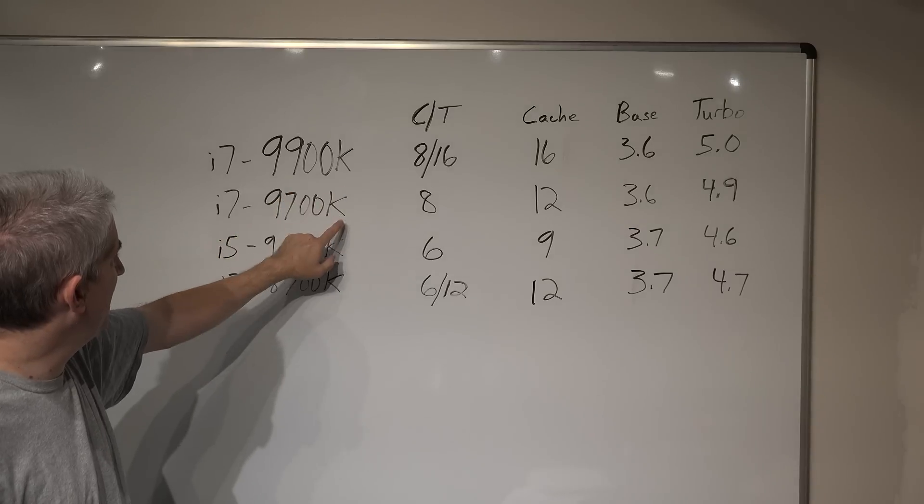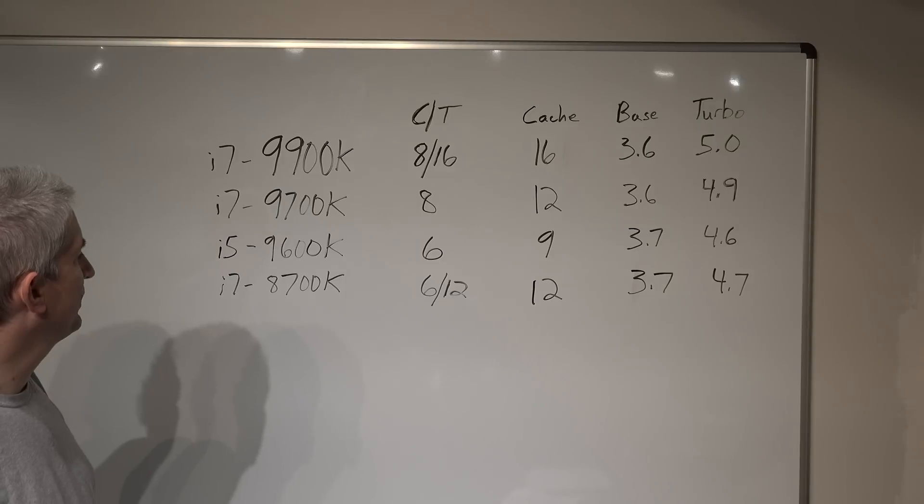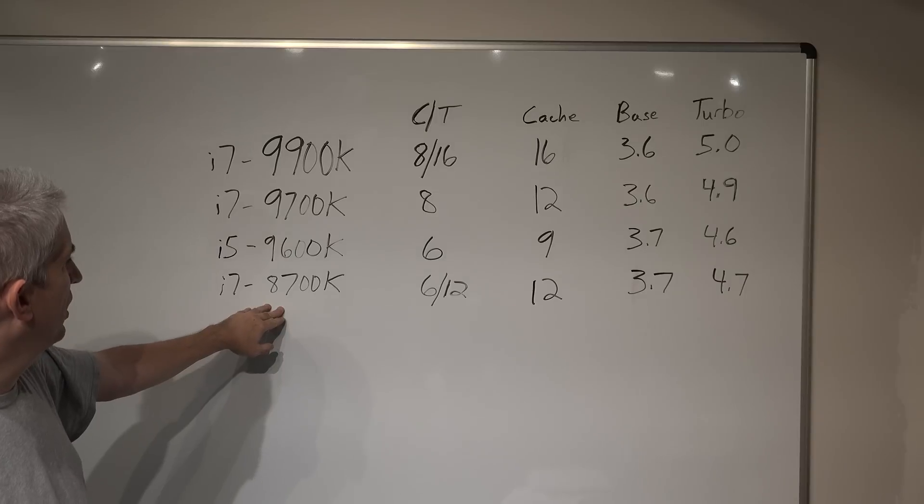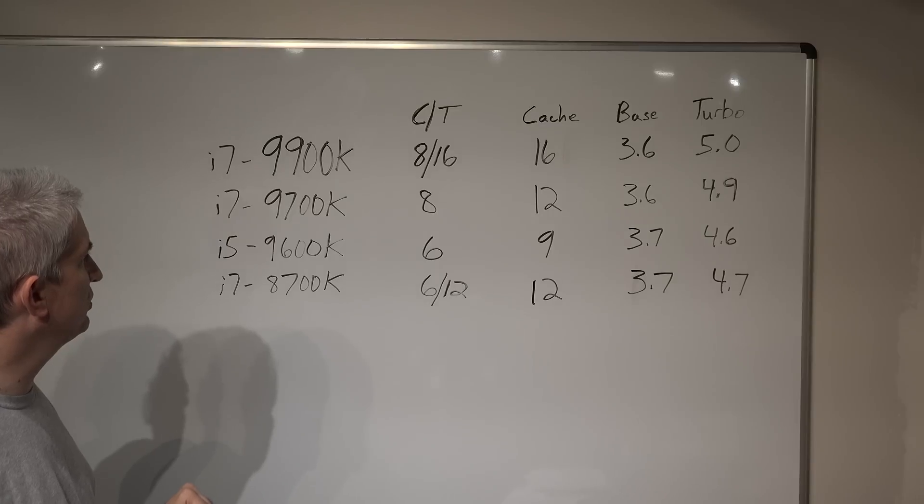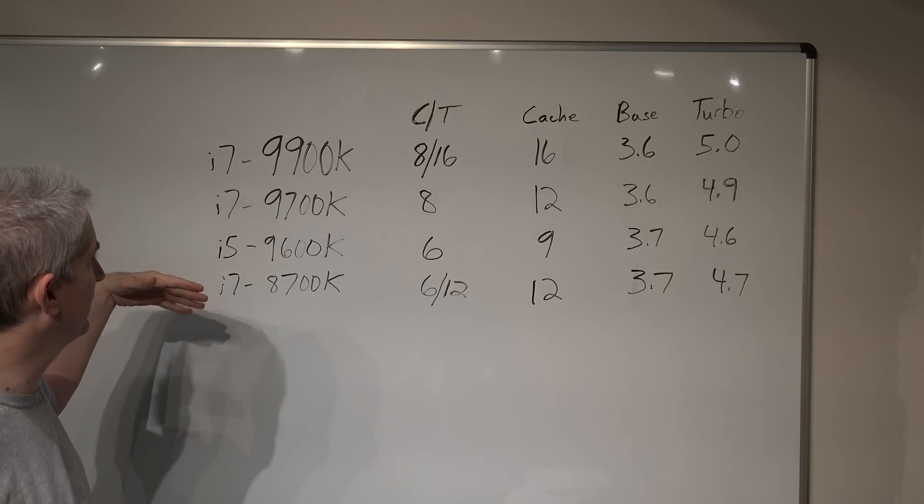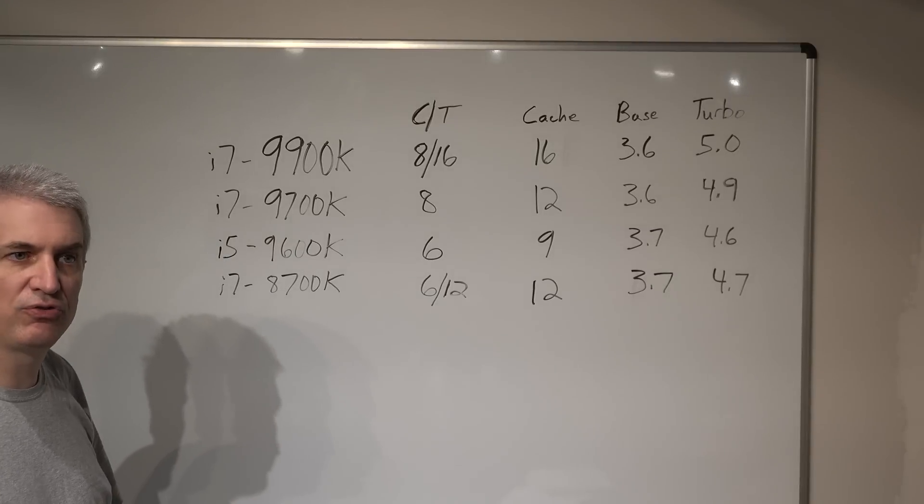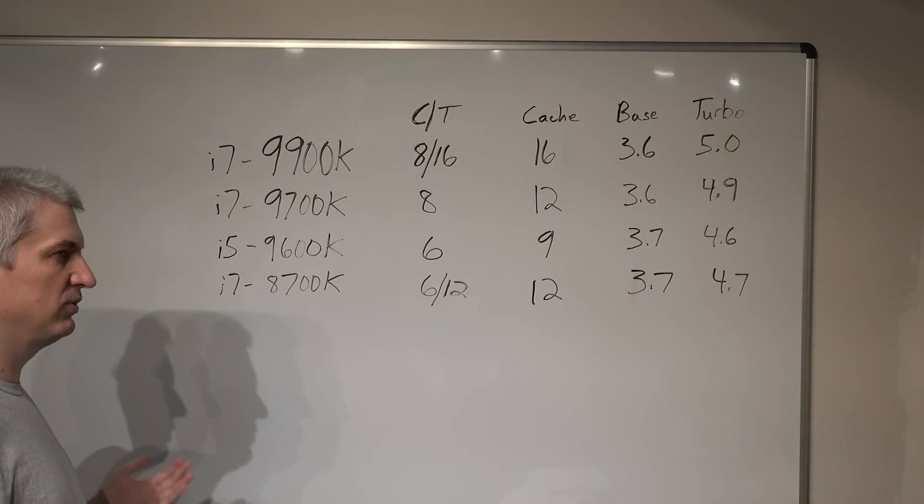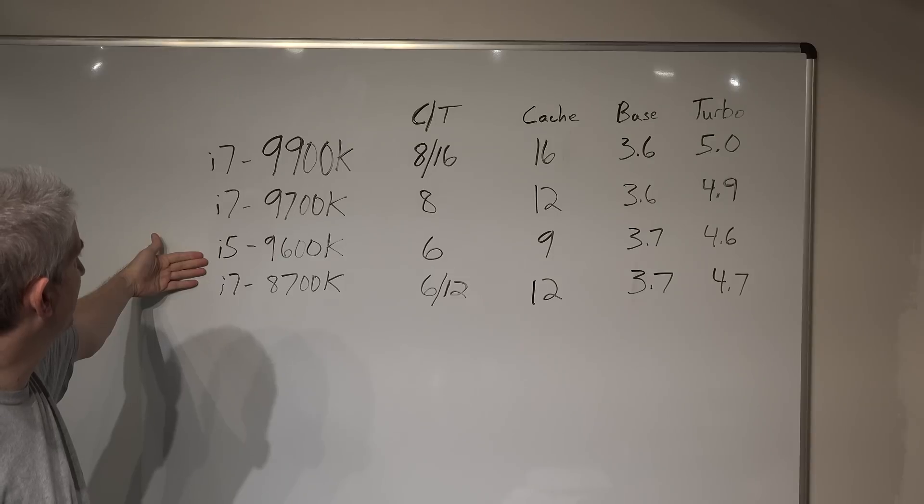Now the last letter, the K on all these means they're unlocked. So the multiplier is unlocked, meaning we can overclock these chips. The base clock on all these chips is 100 megahertz, and then we use a multiplier to get to the frequency that you're actually running. So if it's running 4 gigahertz, the multiplier is 40 times 100, which gives you 4000 megahertz or 4 gigahertz.